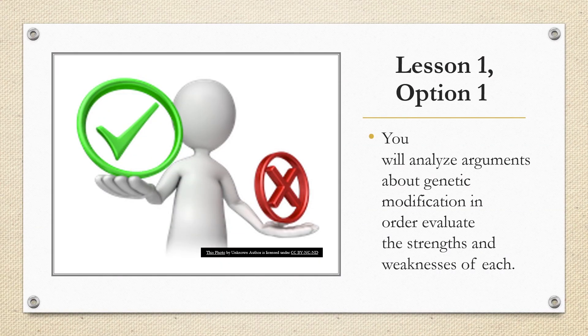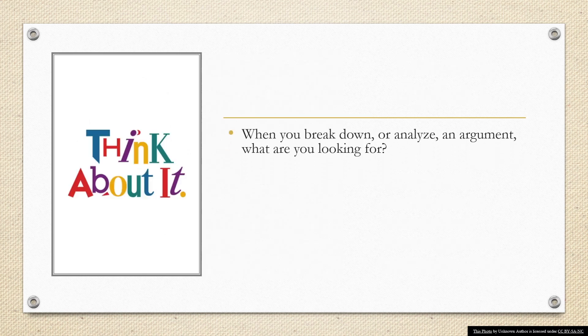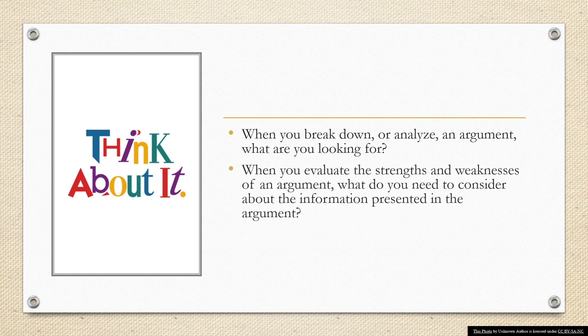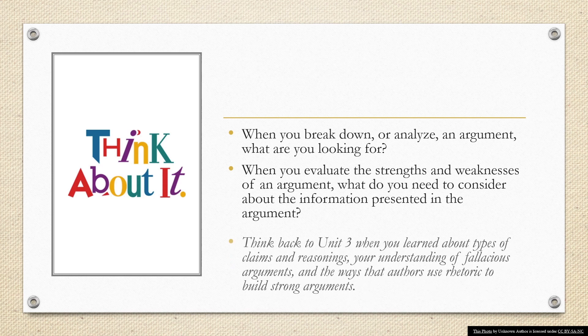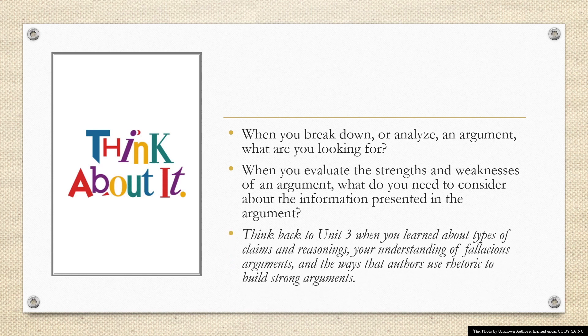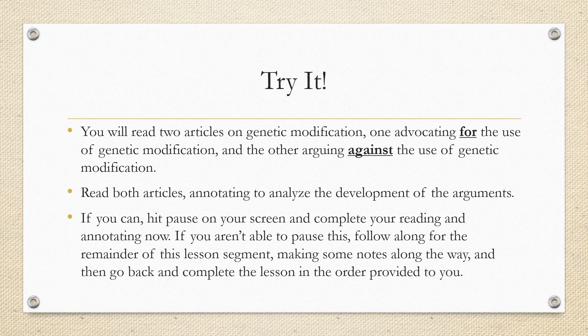Lesson 1, Option 1: You will analyze arguments about genetic modification in order to evaluate the strengths and weaknesses of each. When you break down or analyze an argument, what are you looking for? When you evaluate the strengths and weaknesses of an argument, what do you need to consider about the information presented? You may want to think back to Unit 3 when you learned about types of claims and reasoning, your understanding of fallacious arguments, and the ways that authors use rhetoric to build strong arguments. Now you will read two articles on genetic modification — one advocating for its use and the other arguing against it. Read both articles annotating to analyze the development of the arguments. If you can, hit pause on your screen right now and complete your reading and annotating.